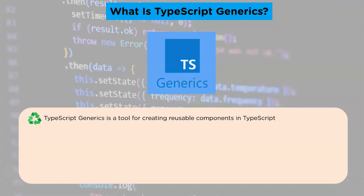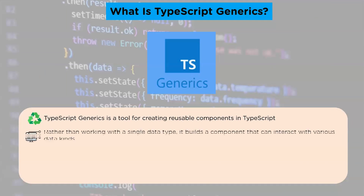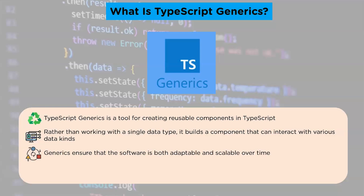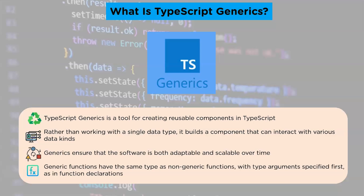TypeScript generics is a tool for creating reusable components in TypeScript. Rather than working with a single data type, it builds a component that can interact with various data kinds, enabling users to consume these components while also using their own kinds. Generics ensure that the software is both adaptable and scalable over time. Type safety is provided via generics without sacrificing performance or efficiency. The type variable in TypeScript is used to denote types and uses generics. Generic functions have the same type as non-generic functions, with type arguments specified first as in function declarations.